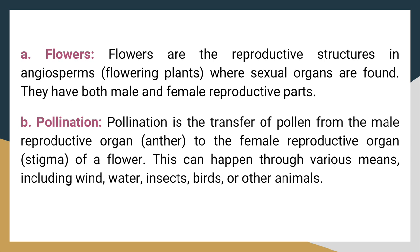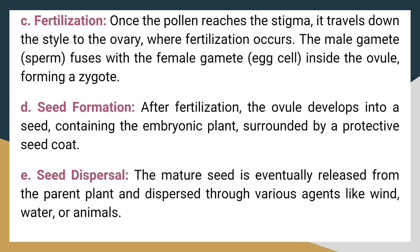Fertilization. Once the pollen reaches the stigma, it travels down the style to the ovary, where fertilization occurs. The male gamete, sperm, fuses with the female gamete, egg cell, inside the ovule, forming a zygote. Seed formation. After fertilization, the ovule develops into a seed containing the embryonic plant, surrounded by a protective seed coat. Seed dispersal. The mature seed is eventually released from the parent plant and dispersed through various agents like wind, water, or animals.